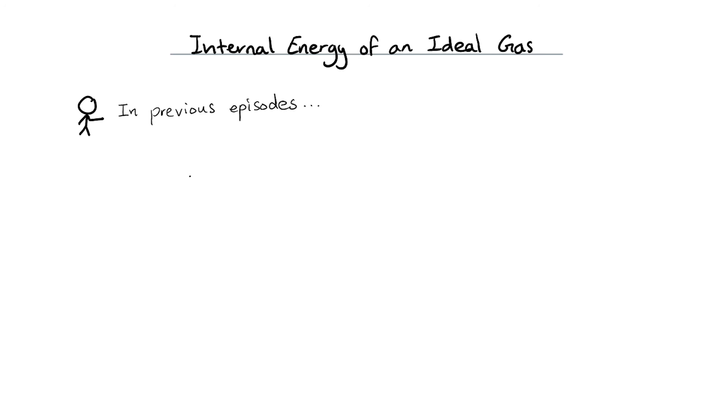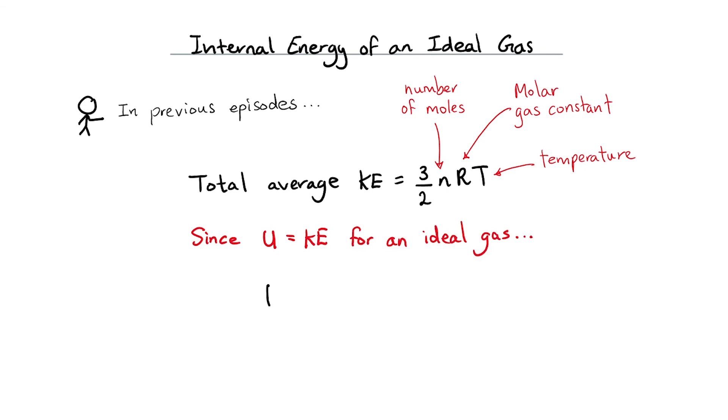In previous lessons, we have established that the total kinetic energy of an ideal gas is 3 over 2 nRT. Small n is the number of moles in the gas, r is the molar gas constant, t is the temperature of the gas. Since U is equal to KE for an ideal gas, we can say that the total internal energy is also equal to 3 over 2 nRT.